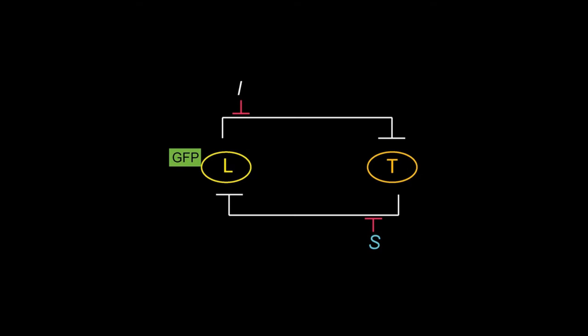So this is a system of mutual repressors. These two repressors could be modulated using external signals I and S. For example, you can use IPTG to modulate the lac operon whereas tetracycline could be used to control the repression by teta R. L is fused to GFP so that we can measure the level of expression by flow cytometry.